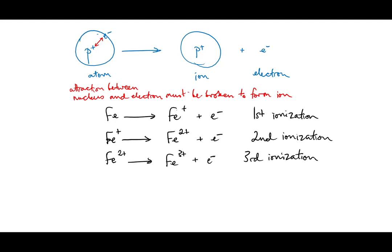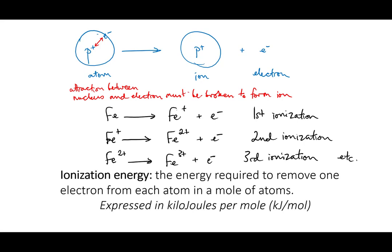The ionization energy is defined as the amount of energy needed to ionize a mole of atoms. So it's expressed in kilojoules per mole, and different elements have different ionization energies.